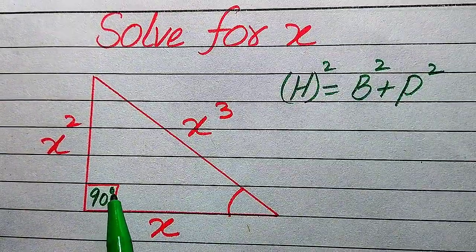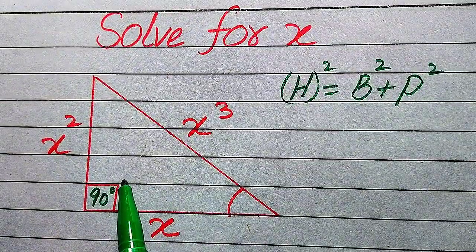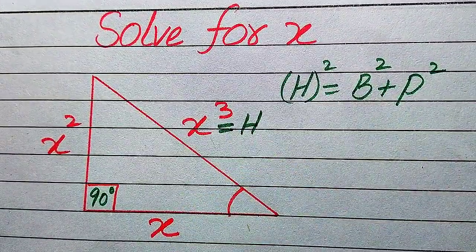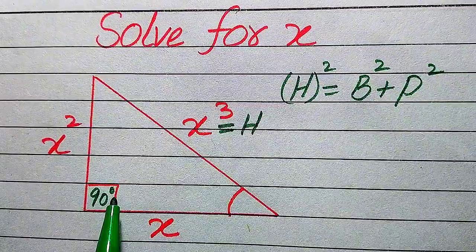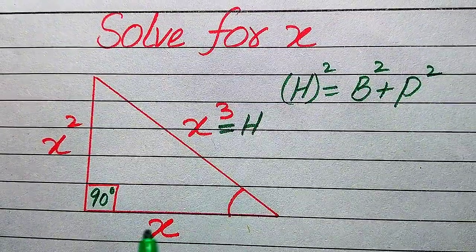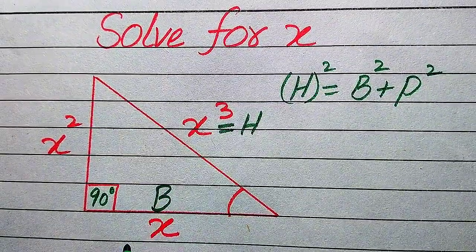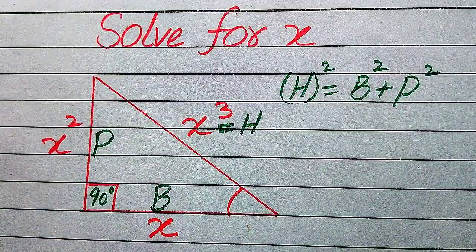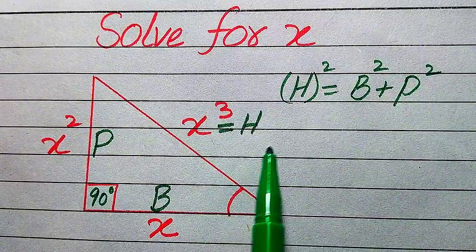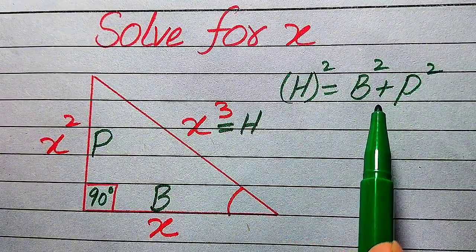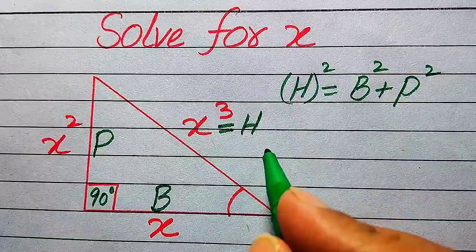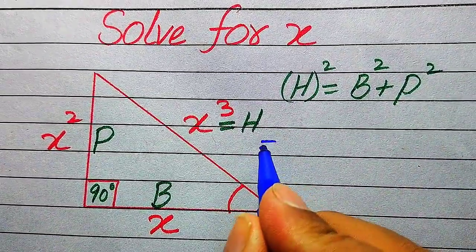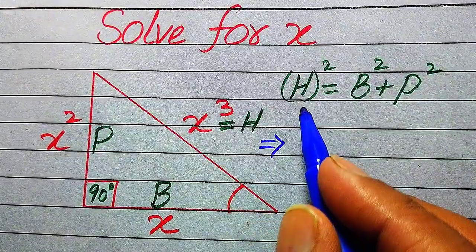The side opposite to the 90-degree angle is called the hypotenuse, so x³ is the hypotenuse. The side joining the two other angles is the base, and the third side is the perpendicular. Now we know all three values and substitute them into the formula.